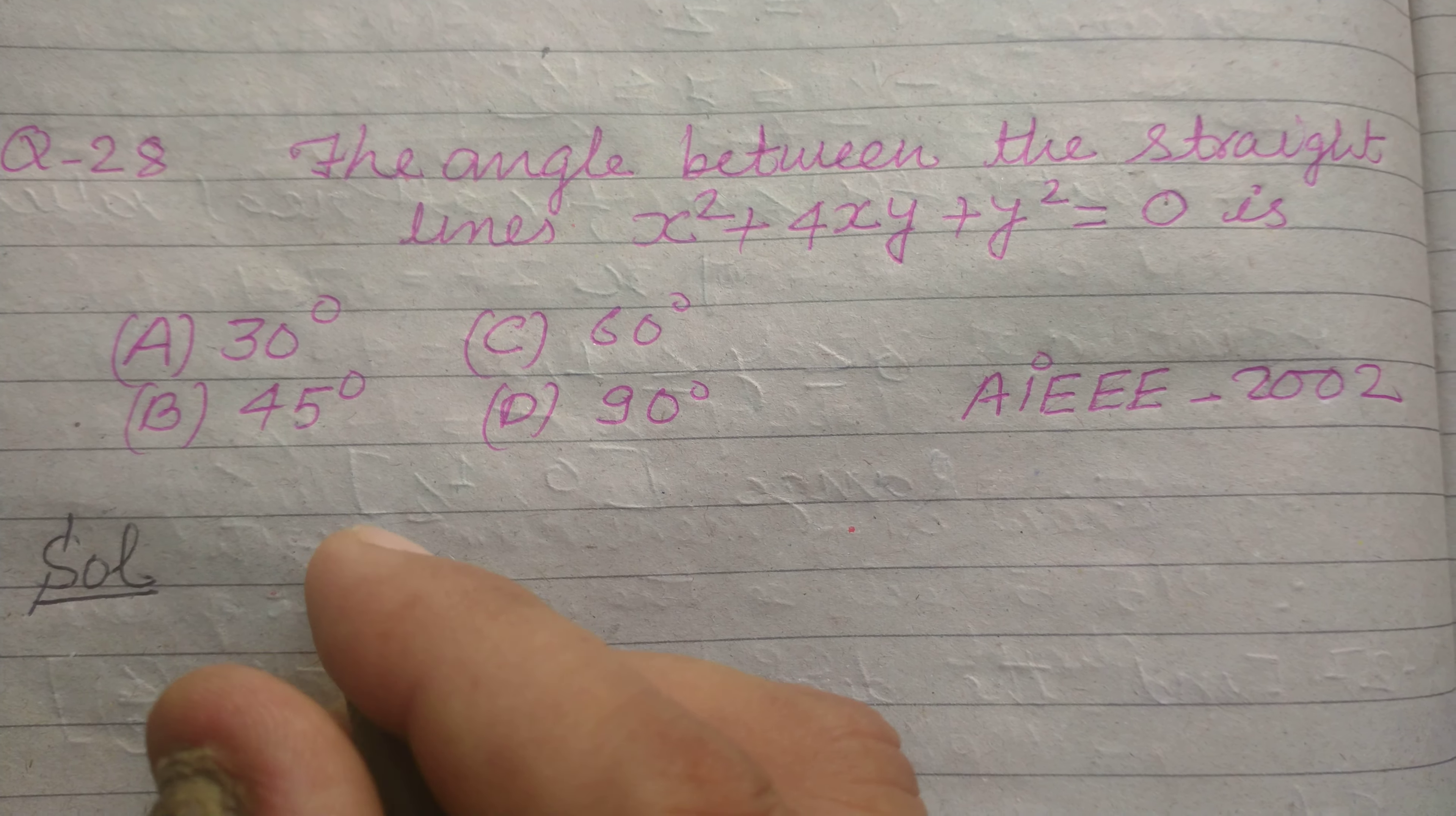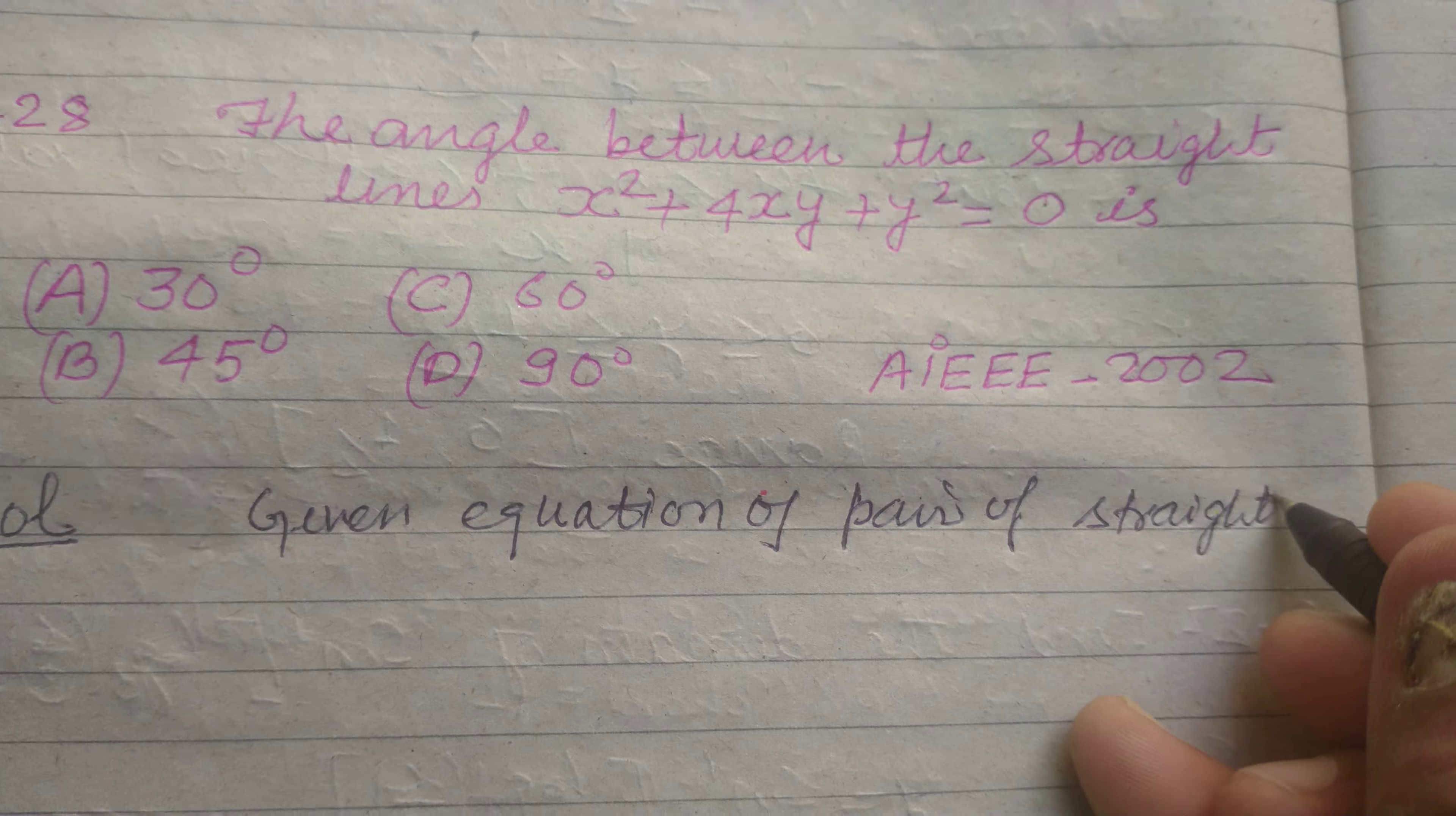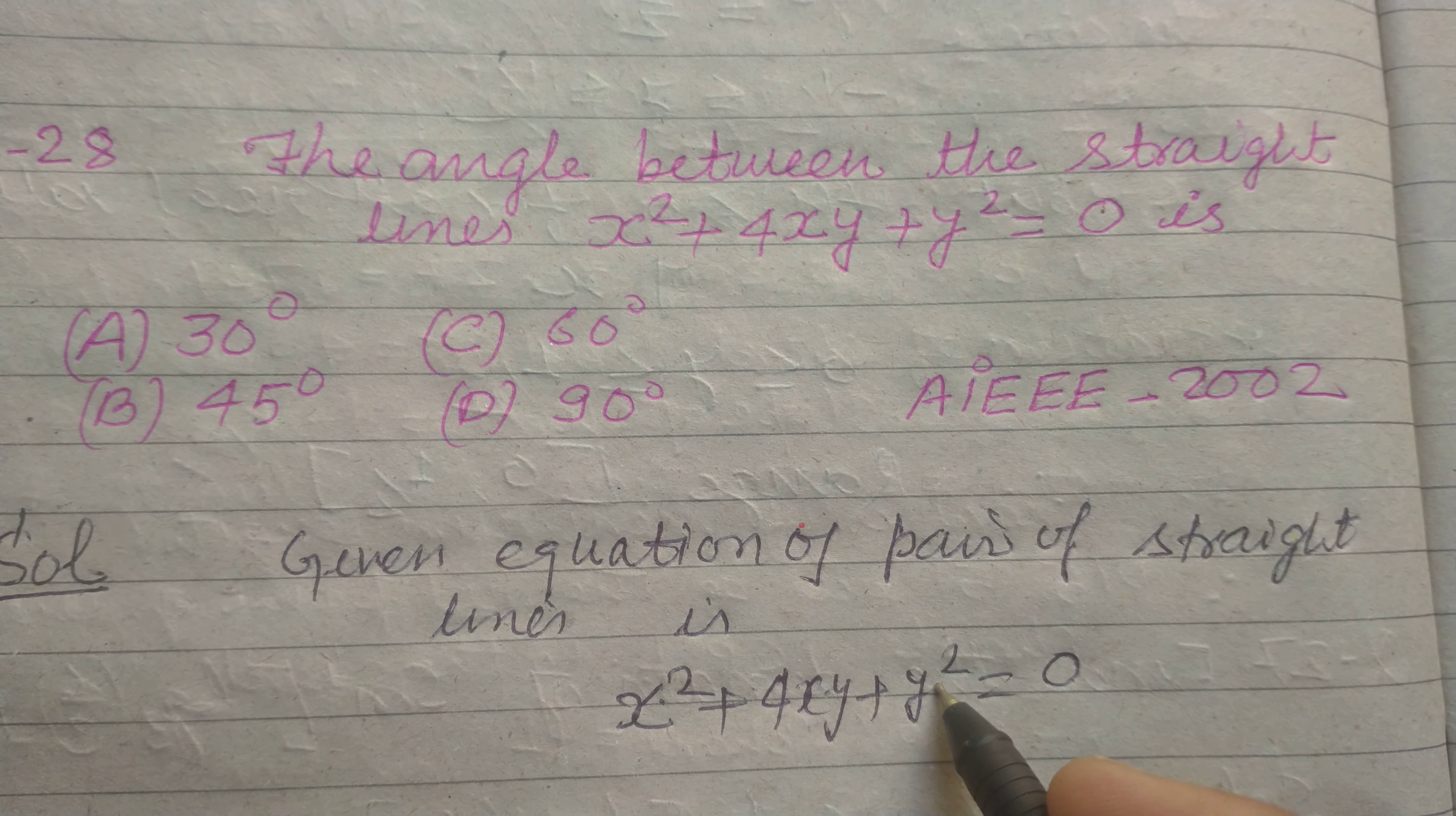So students, here the given equation of pair of straight lines is x² + 4xy + y² = 0. This is the quadratic equation in x² as well as in y².